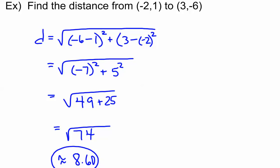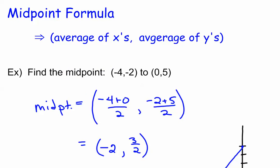All right, the next formula, really, really easy. It's the midpoint formula, and all that is is finding the average of the x's and the average of the y's. Average, you know, you add and divide.